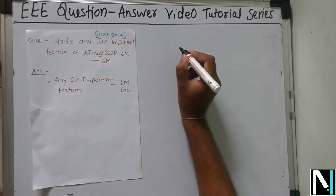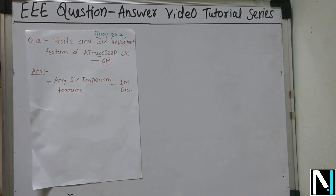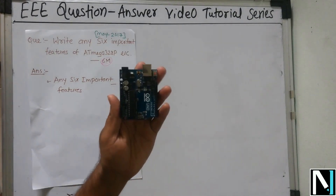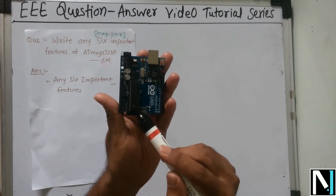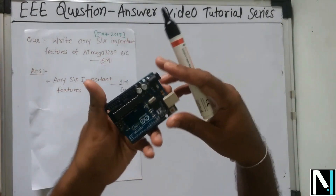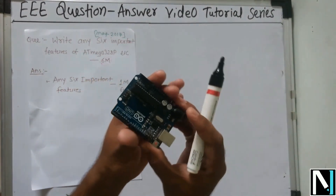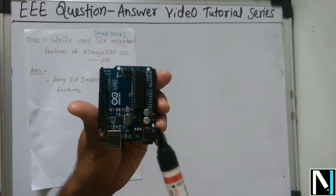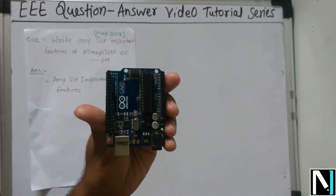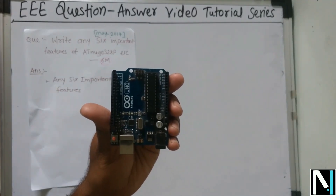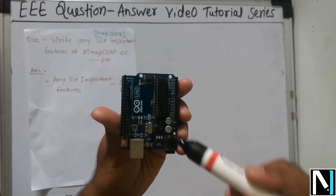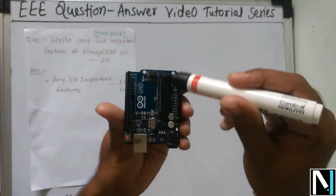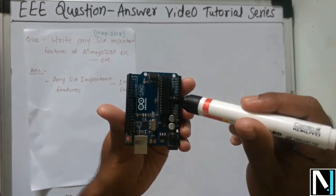Before that, I will just show you the ATmega 328P microcontroller IC. This is your Arduino UNO board, and this is your 28-pin ATmega 328P microcontroller IC. I am going to write the features of this IC.